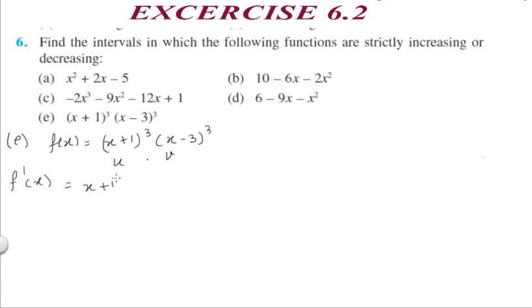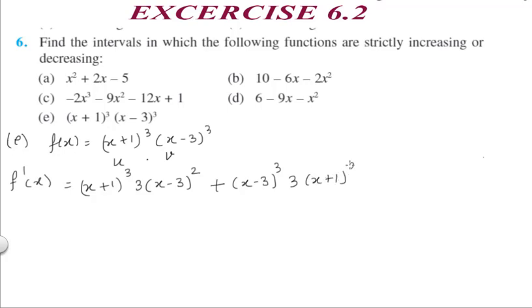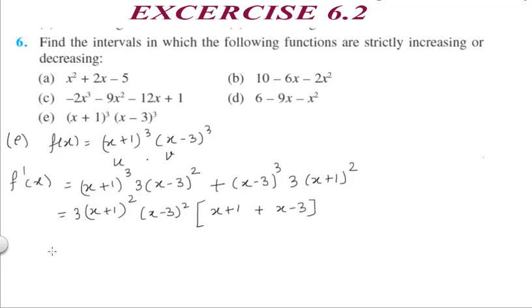Applying the product rule: the first function (x+1)³ as it is, times the differentiation of (x-3)³, which is 3(x-3)², times 1; plus (x-3)³ as it is, times the differentiation of (x+1)³, which is 3(x+1)². Taking (x+1)² and (x-3)² and 3 as common, we are left with (x+1) + (x-3) inside the bracket.